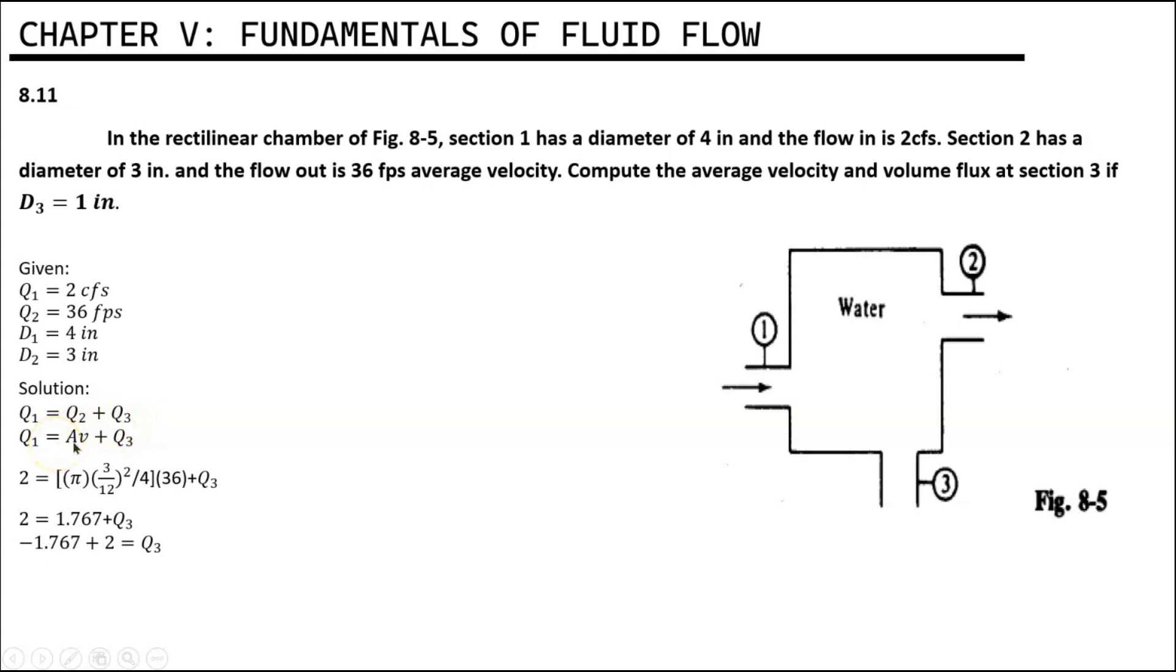Q1 equals Q2, which is also equal to area times velocity, plus Q3. Plugging all the given values, we have 2 equals pi times 3 over 12 squared divided by 4 times 36 plus Q3.